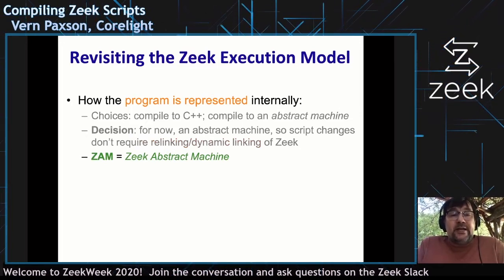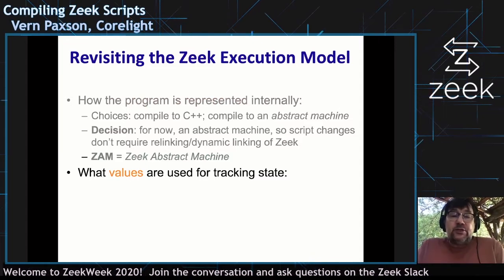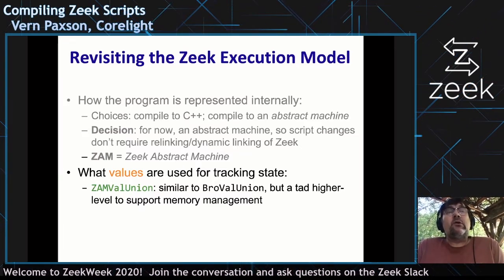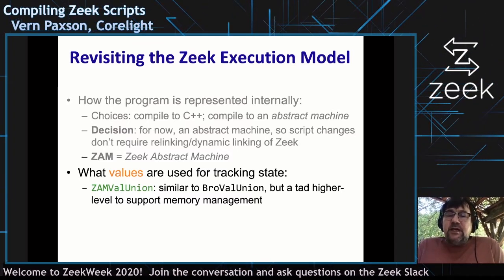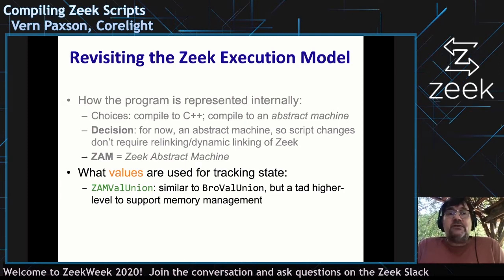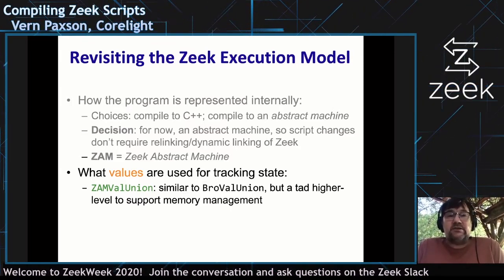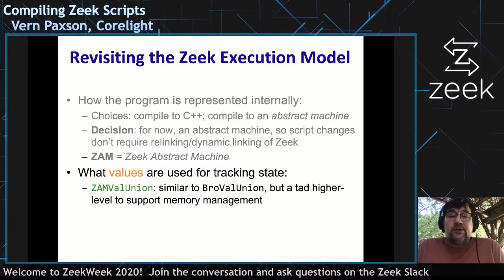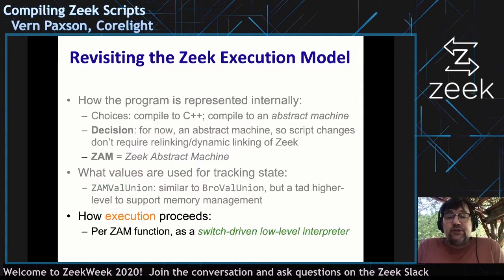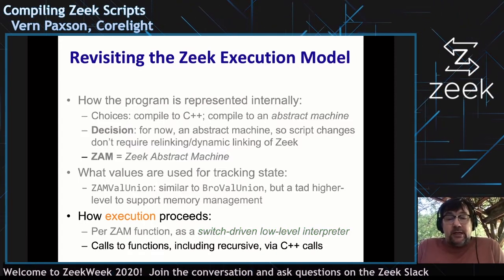This abstract machine is called ZAM — Zeek Abstract Machine. That's the program representation. We need to design values, and the BroVal union is not appropriate for low-level execution because it's in some ways too low level — the fact that it doesn't use reference counting for aggregates means you cannot easily share those aggregates in multiple places, even though Zeek script semantics are that aggregates are essentially shallow copy. The ZAM value union is a lot like the BroVal union but it has hooks for this. Execution is going to be a loop with a switch in it — a low-level interpreter — and calling functions will be done using C++ calls, including recursion.